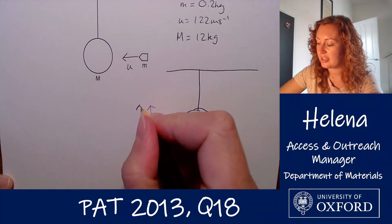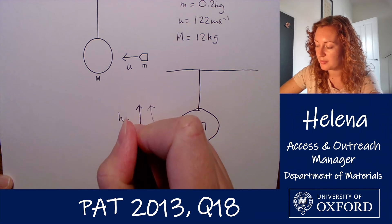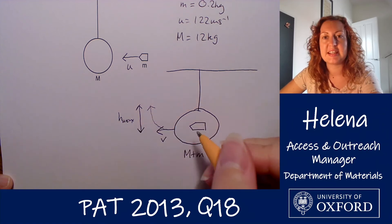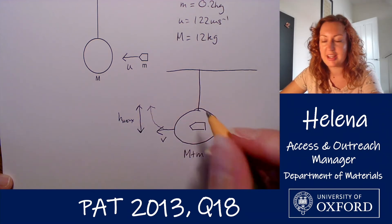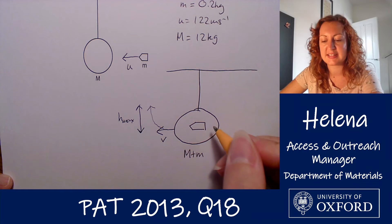Until it reaches a maximum height, let's call that h_max, at which point its velocity will be zero. And this is the height that we're being asked to find.